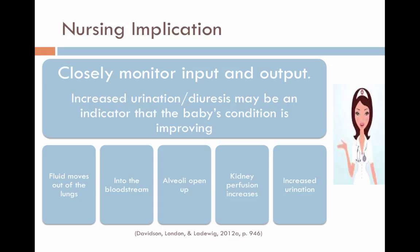Increased urination may be an indicator that the baby's respiratory function is improving. The nursing implication here includes closely monitoring input and output, because as the fluid moves out of the lungs into the bloodstream, the alveoli open up. Kidney perfusion increases, which leads to increased urine production.